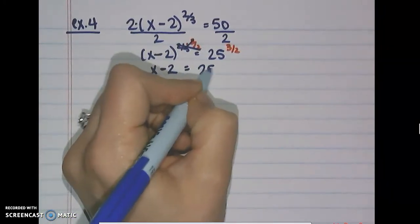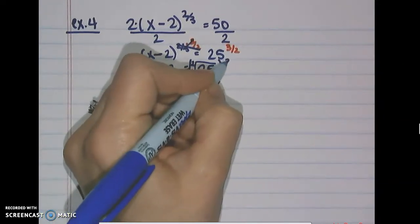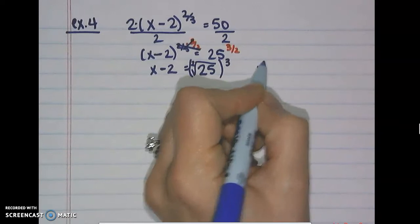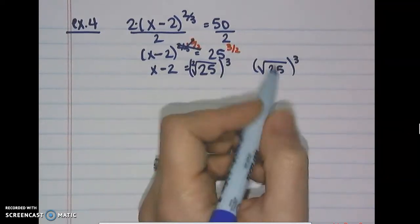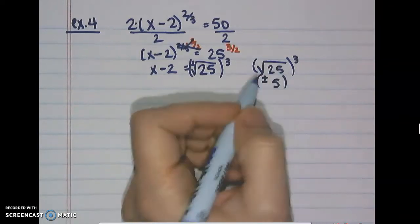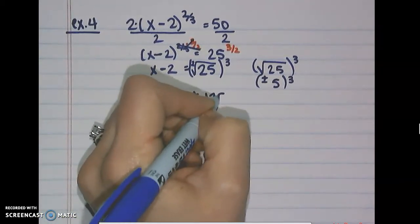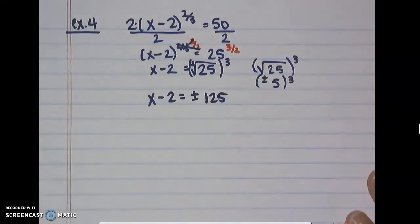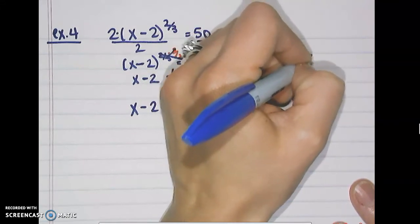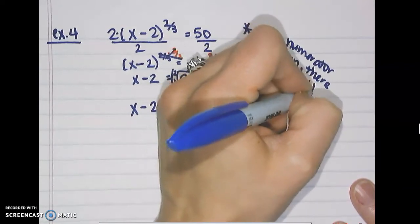On the right-hand side we have 25 to the 3/2 power — that means we take the square root of 25 and raise it to the third power (root on the bottom, exponent on the top). The square root of 25 is positive or negative 5, and taking that to the third power gives ±125. Note: when the numerator of the rational exponent is even, there can be two answers.